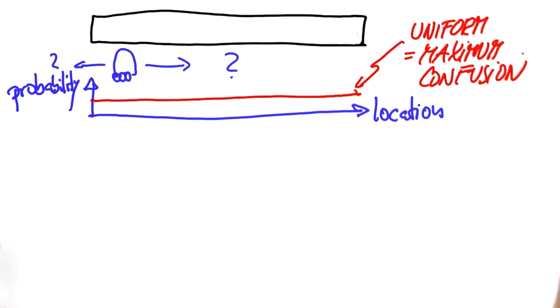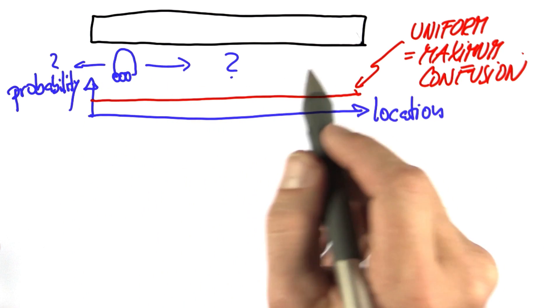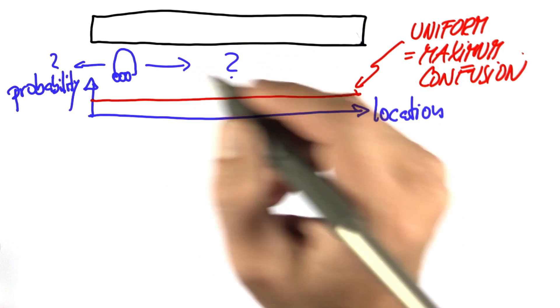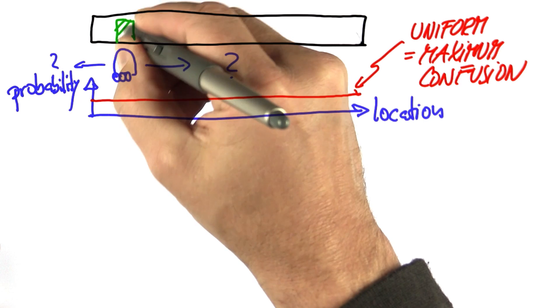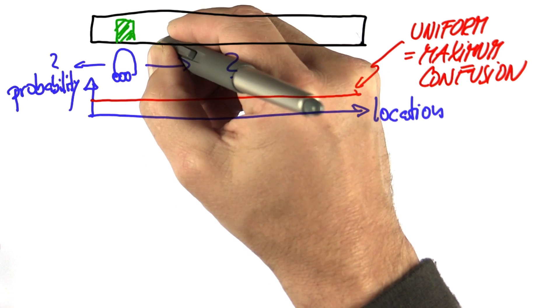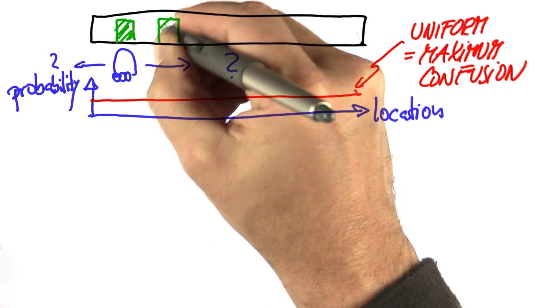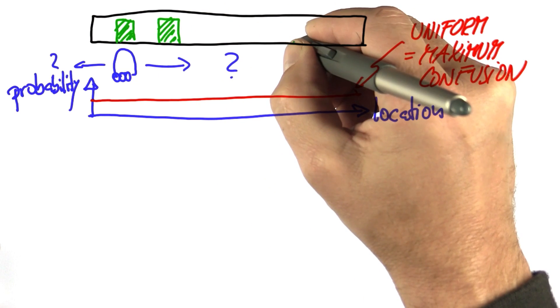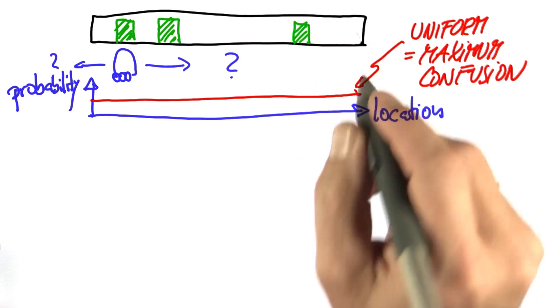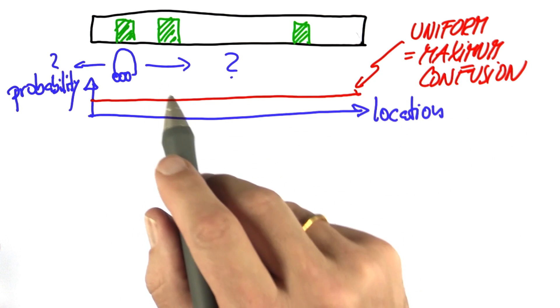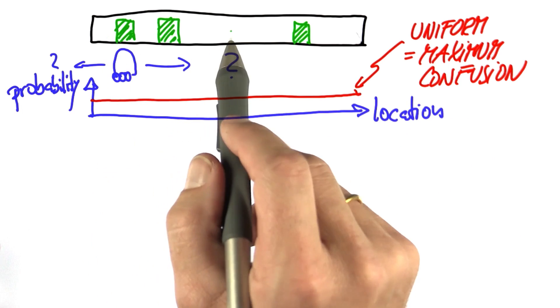That is the state of maximum confusion. Now, to localize, the world has to have some distinctive features, so let's assume there's three different landmarks in the world. There's a door over here, there's a door over here, and a third one way back here. And for the sake of the argument, let's assume they all look alike, so they're not distinguishable. But you can distinguish the door from the non-door area, from the wall.